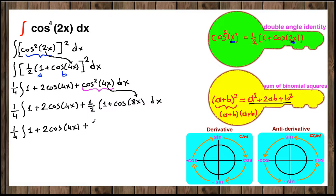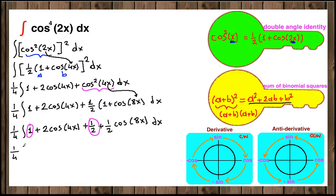Distributing the one half: one half times 1 is one half, and one half times cosine of 8x is one half cosine of 8x. Now we combine like terms: 1 and one half are like terms, so 1 plus one half is three over 2. We have one fourth in front of the integral of three over 2 plus 2 cosine of 4x plus one half cosine of 8x.